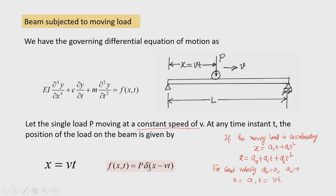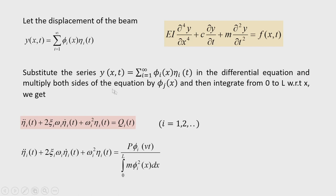The Dirac delta function δ(x − Vt) associated with load P represents the distributed load on the beam. The Dirac delta function has a very significant property: the integration of some function — say a mode shape function — multiplied by the Dirac delta function and integrated between 0 and L equals φ(Vt). We will utilize this result to find the generalized force.